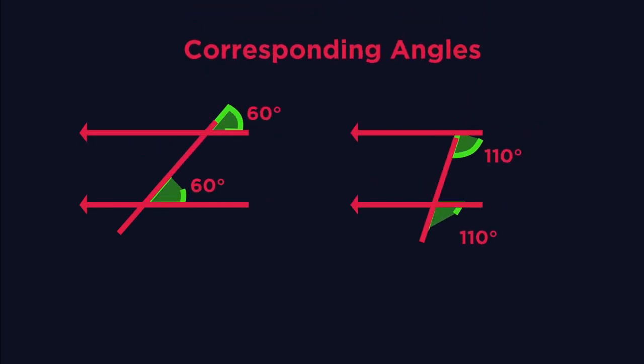These angles are called corresponding angles. What do you notice about them? Corresponding angles are also the same. But this time, they look more like an F than a Z.